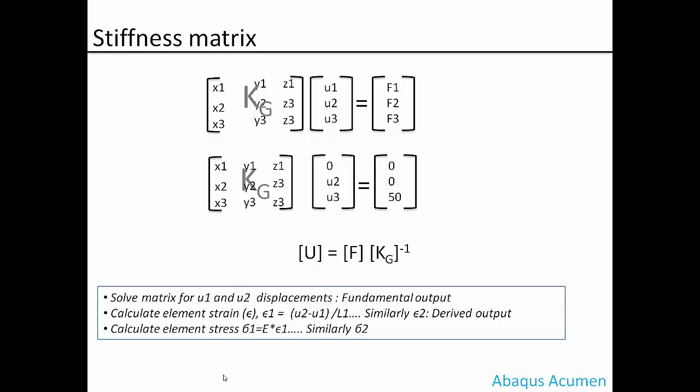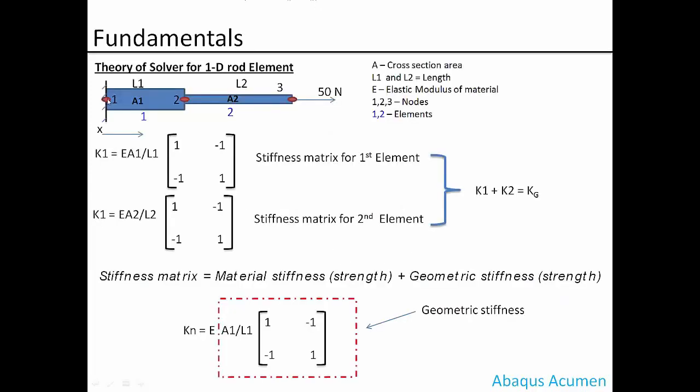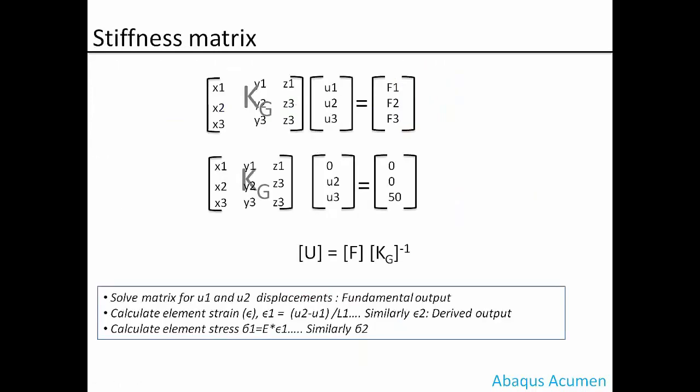Once we have this global stiffness, it will arrange in such a way that KU equals F. This is the global stiffness matrix Kg, and you have u1, u2, u3, that is displacement at each node. The displacement at node 1 is u1, at node 2 is u2, and u3 is displacement at node 3, followed by f1, f2, f3.